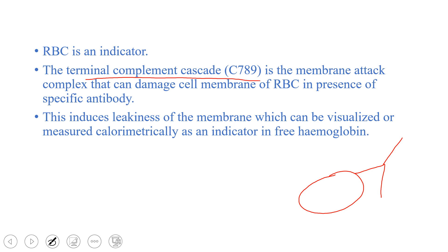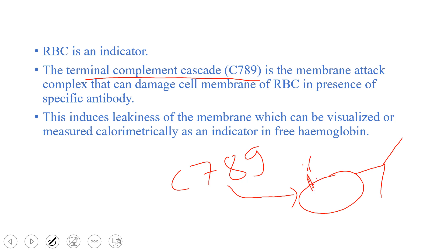There is a complement protein called the terminal complement cascade, or C7, C8, C9. These C789 proteins are responsible for the membrane attack complex — they attack the cell membrane and lyse the cell. Since RBCs are also cells, if RBCs attach to C789 complement proteins, it will burst the cell wall and the contents inside the RBC will come outside.